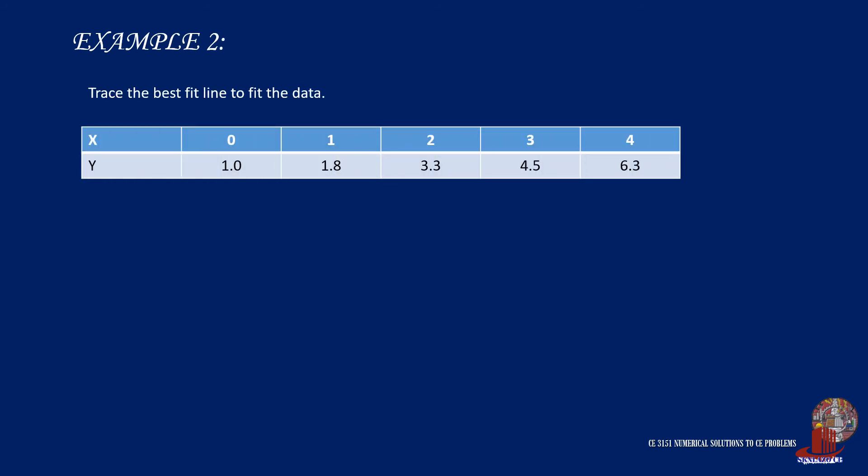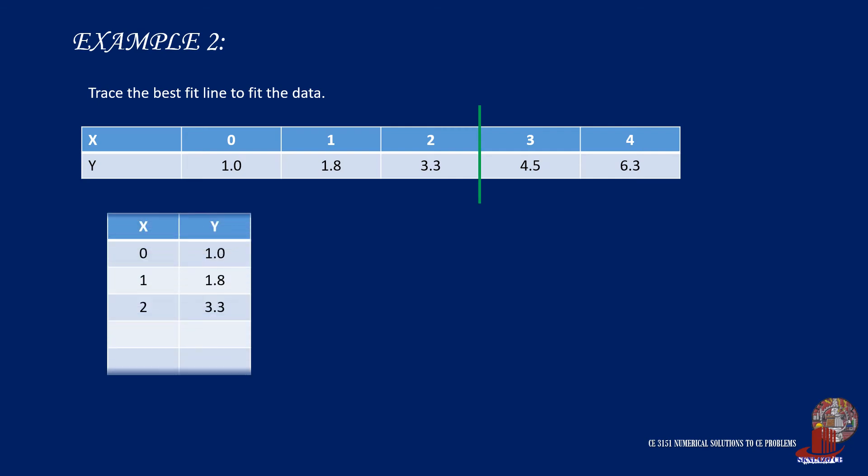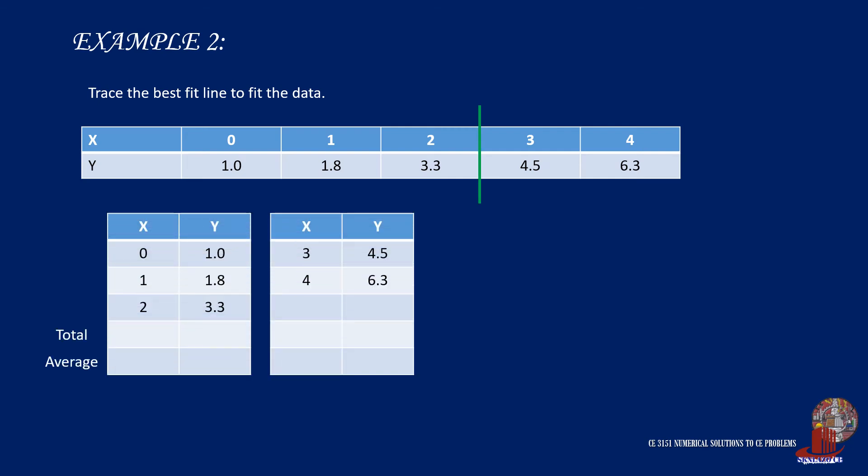Example 2 showcases odd numbered dataset. In this case, the first group will take the excess of points, so the first group will cover 3 points and the second has 2 points. Take the total of x which turns out as 3 and its average is 1. y sub 1 is then totaled as 6.1 and the average is 2.03333. For the second group, summation of x sub 2 is then 3 plus 4 or 7 and divide this value by 2 to take the average which is 3.5. Summation of y sub 2 is 10.8 from 4.5 plus 6.3 and then the average will be 5.4. So, the derived equations are 2.0333 is equal to a plus b for the first and 5.4 is equal to 3.5a plus b for the second.